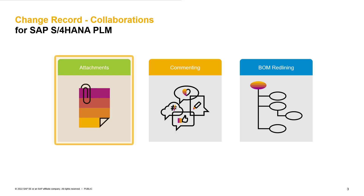With the attachment function, we are not only able to add existing document info records into the change record. We can also drag and drop local files and documents from our computer. In addition, we can share websites or web links in the change record. A document info record is automatically created once we have dragged and dropped files into the section. The attachment function is available not only on the change record header level, but also on single change items.